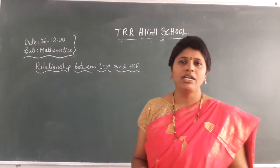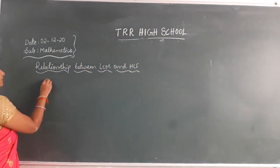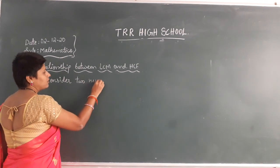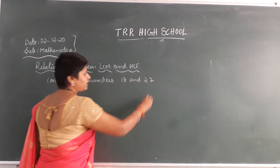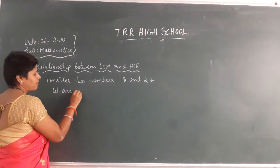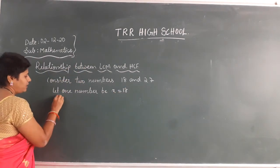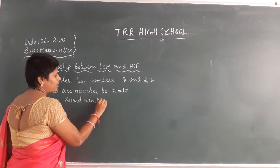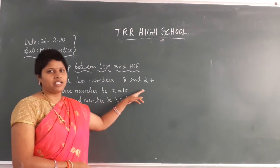What is the relationship between LCM and HCM by considering 2 numbers? Suppose we consider 2 numbers: 18 and 27. Let the first number be x equal to 18, and let the second number be y equal to 27. So these are the 2 numbers I have taken.